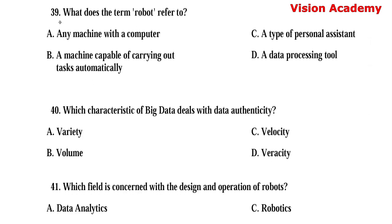Question number 39. What does the term robot refer to? Option A: Any machine with a computer. Option B: A machine capable of carrying out tasks automatically. Option C: A type of personal assistant. Option D: A data processing tool. Here, option B, a machine capable of carrying out tasks automatically, is the right answer.